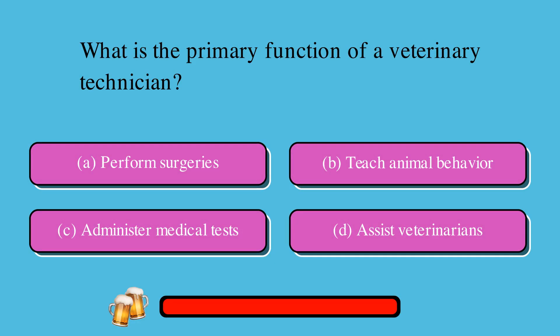What is the primary function of a veterinary technician? A. Perform surgeries, B. Teach animal behavior, C. Administer medical tests, or D. Assist veterinarians.